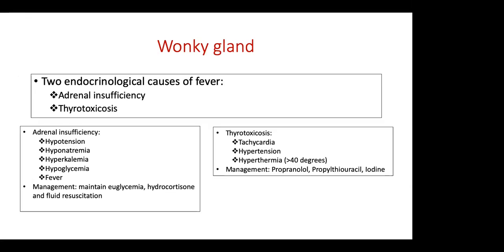The sixth W is wonky glands — glands with erratic functions: adrenal insufficiency and thyrotoxicosis. Adrenal insufficiency can present with fever, hypotension, hyponatremia, hyperkalemia, and hypoglycemia, usually in patients who undergo adrenal surgery or have pre-existing adrenal suppression. Management includes maintenance of euglycemia, hydrocortisone infusion, and fluid resuscitation. Thyrotoxicosis can occur in patients with thyroiditis or hyperthyroidism, presenting with tachycardia, hypertension, and hyperthermia. Management includes propranolol, propylthiouracil, and iodine. These are particularly important to watch for in endocrine wards.